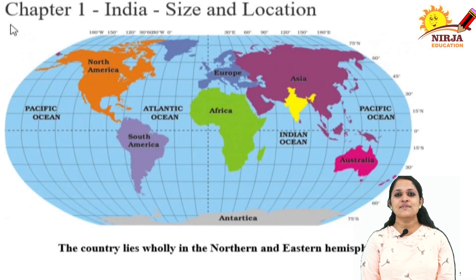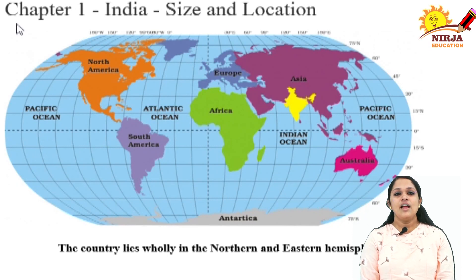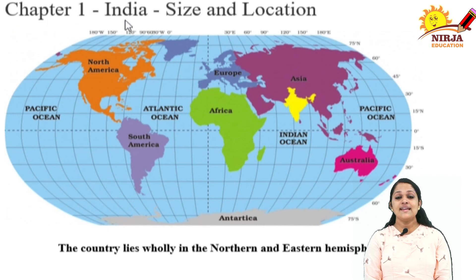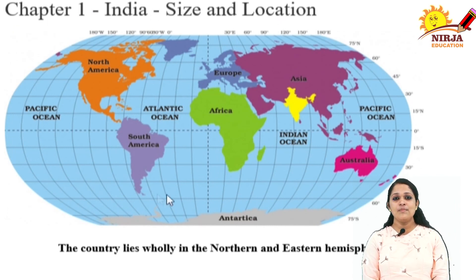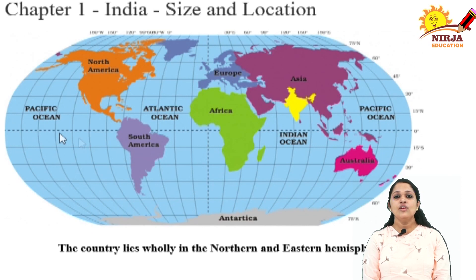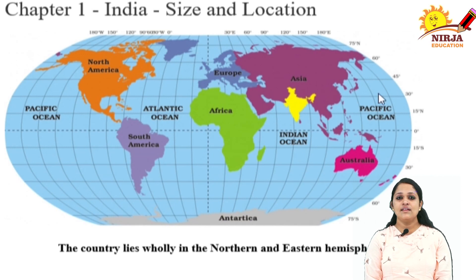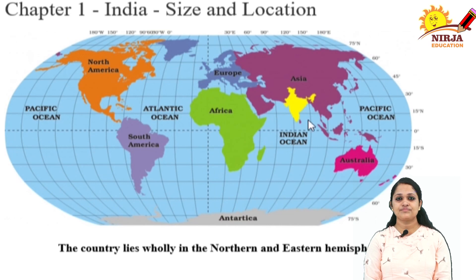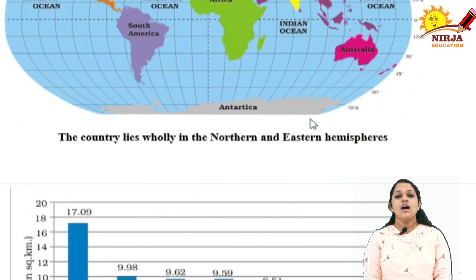Welcome to Neerja Education. Please subscribe to our channel and don't forget to press the bell icon. Today I am going to start the first chapter of geography, that is India Size and Location. Here you can see the world map. This is the north pole, this is the south pole, this is east and this is west. You can locate our country in the northern and eastern hemisphere.